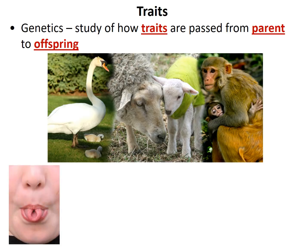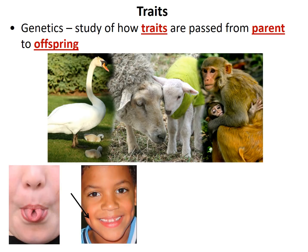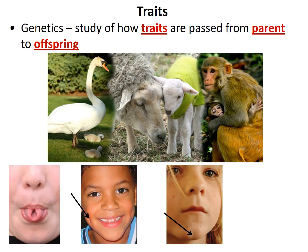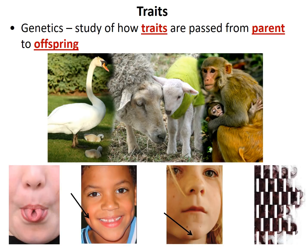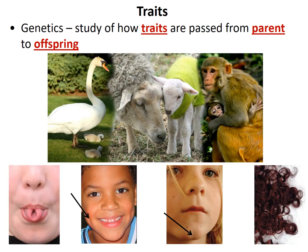Some of the traits we can look at are things like tongue rolling, dimples, cleft chin, hair color or texture. All of those are genetic traits that can be passed down in your genes.